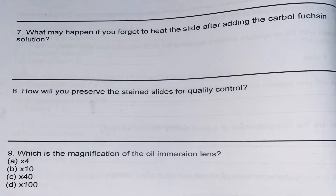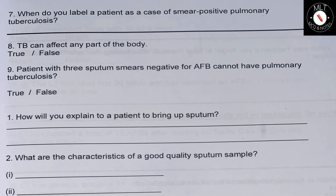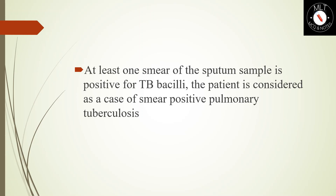Ninth question: Which is the magnification of the oil immersion lens? Option A: 4x, option B: 10x, option C: 40x, option D: 100x. The answer is option D, 100x. Tenth question: When do you label a patient as a case of smear-positive pulmonary tuberculosis? At least one smear of the sputum sample — either A or B — is positive for TB bacilli; the patient is then considered a case of smear-positive pulmonary tuberculosis.